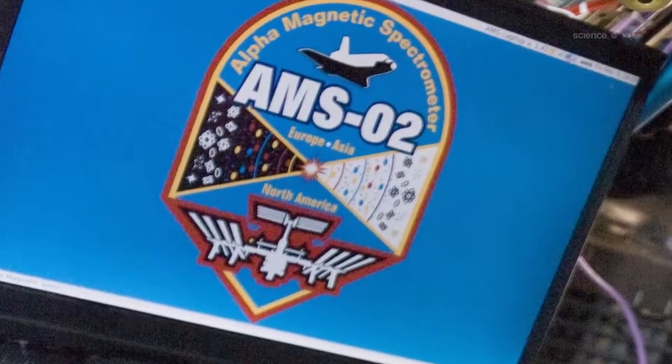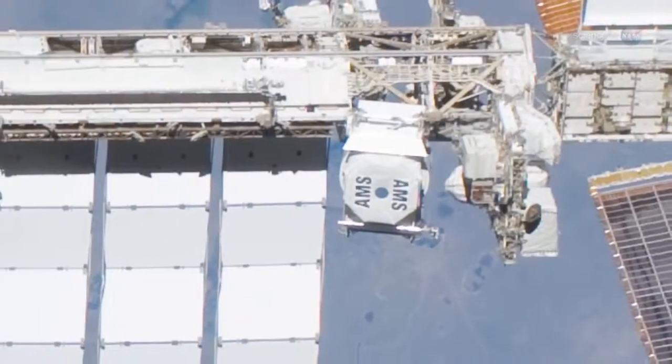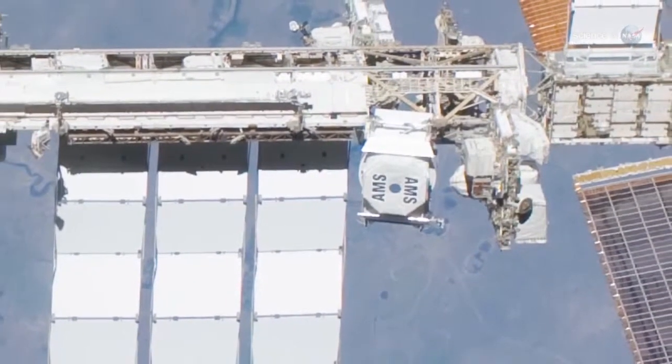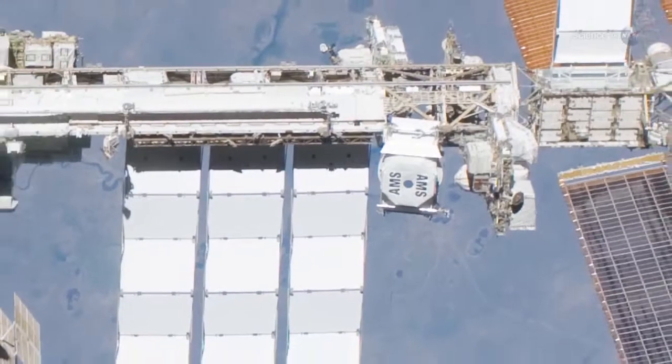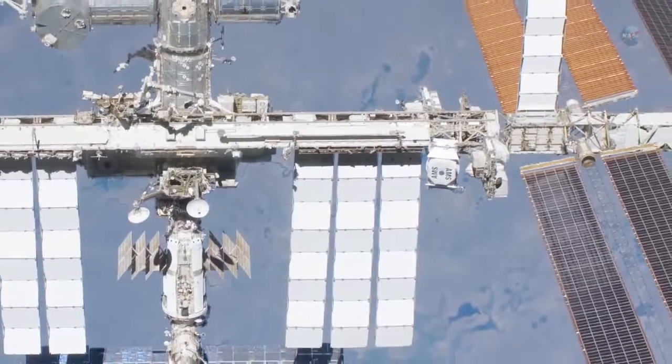It is only a matter of time, perhaps months or a few years. Built by scientists from 16 countries with support from the U.S. Department of Energy, the Alpha Magnetic Spectrometer will continue operating for the rest of the life of the space station, at least until 2020.